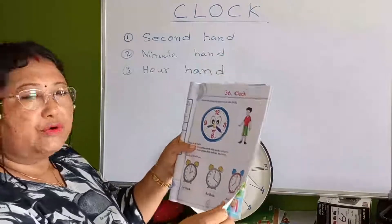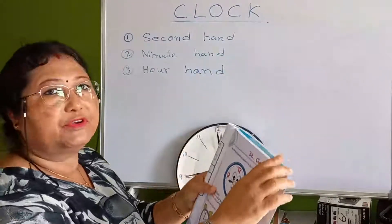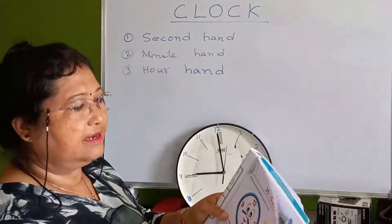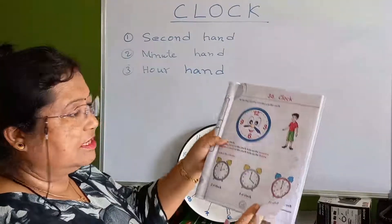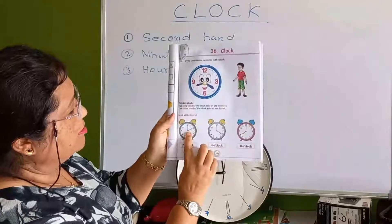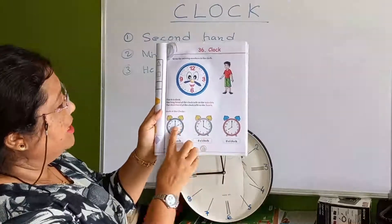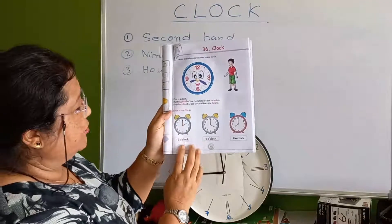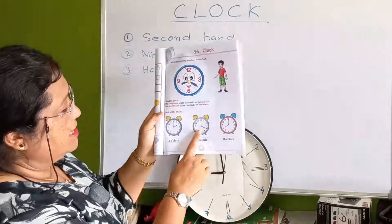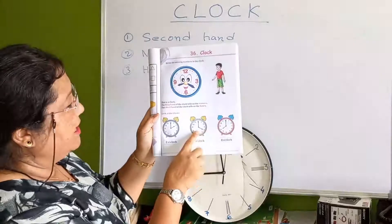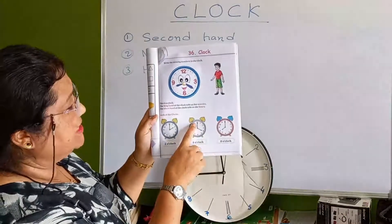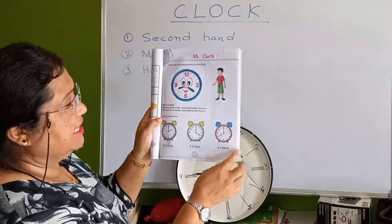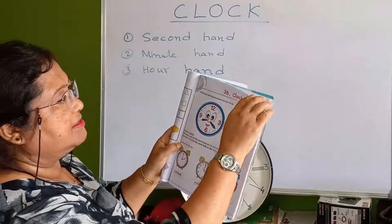Now look in your book — it shows only the hour, so minutes may be difficult for now. When the short hour hand is at 2 and the long minute hand is at 12, the time is 2 o'clock. Here the hour hand is at 4 and the minute hand is at 12, so the time is 4 o'clock. And here it is 8 o'clock. Now turn the page.